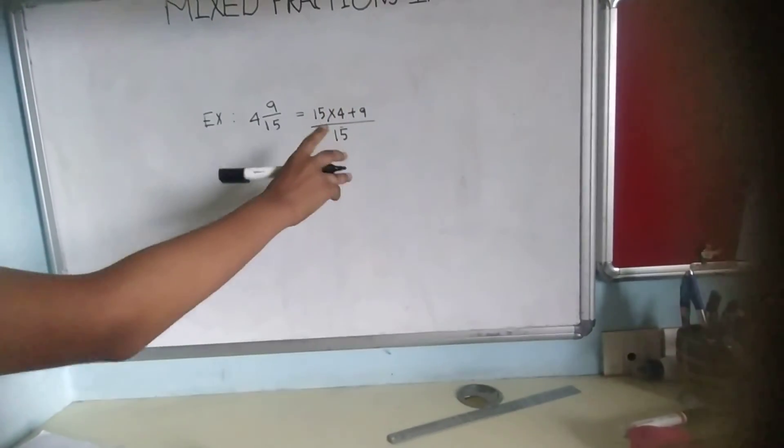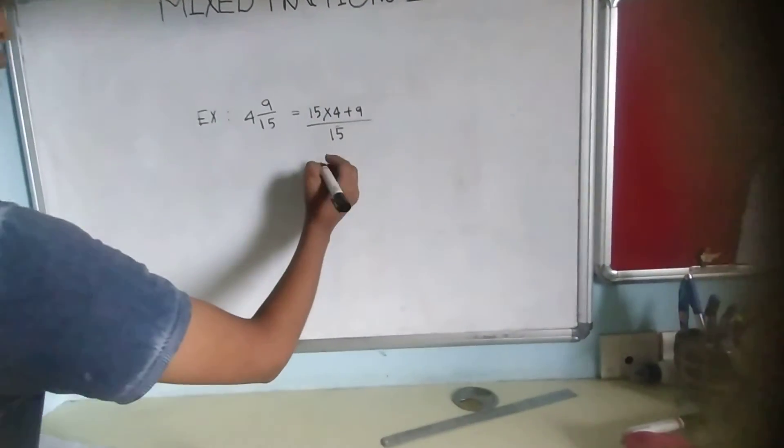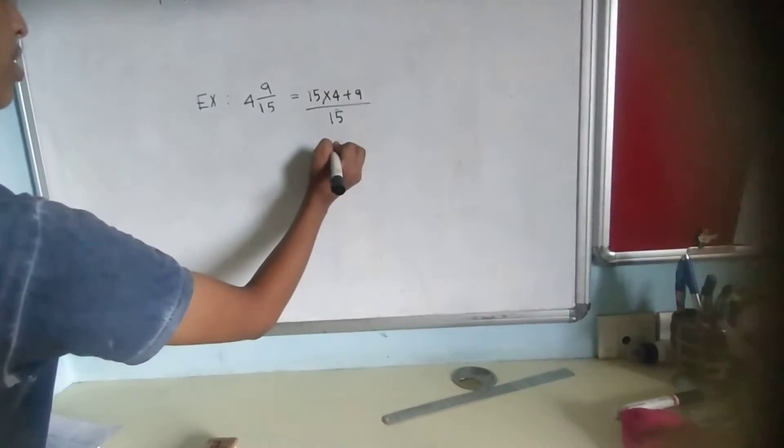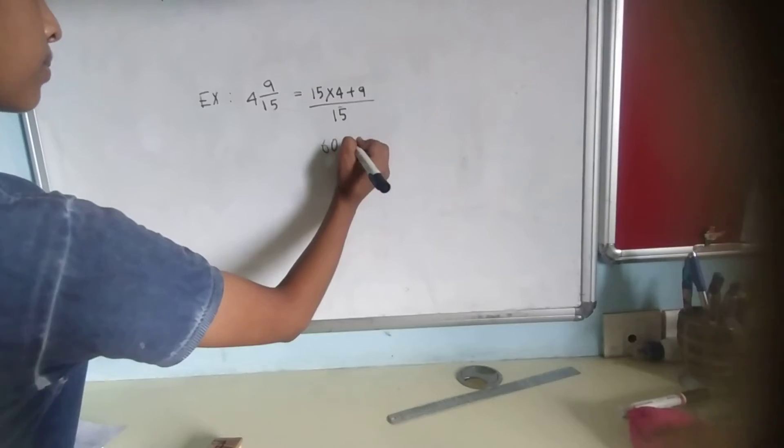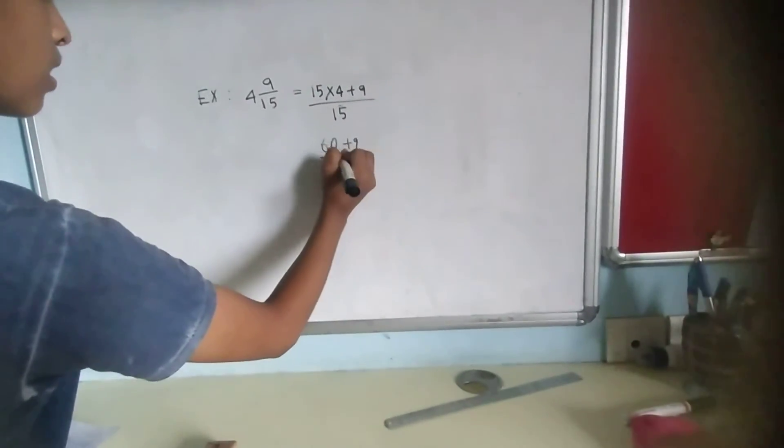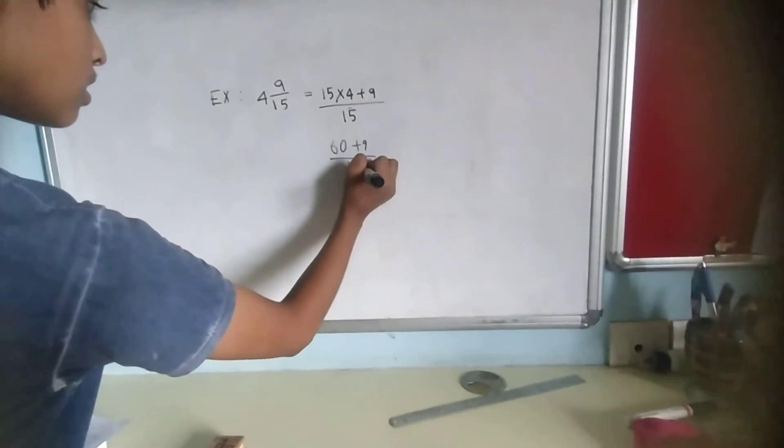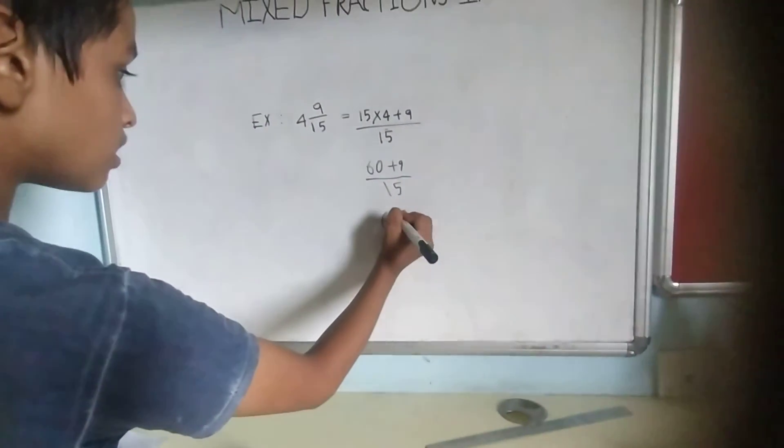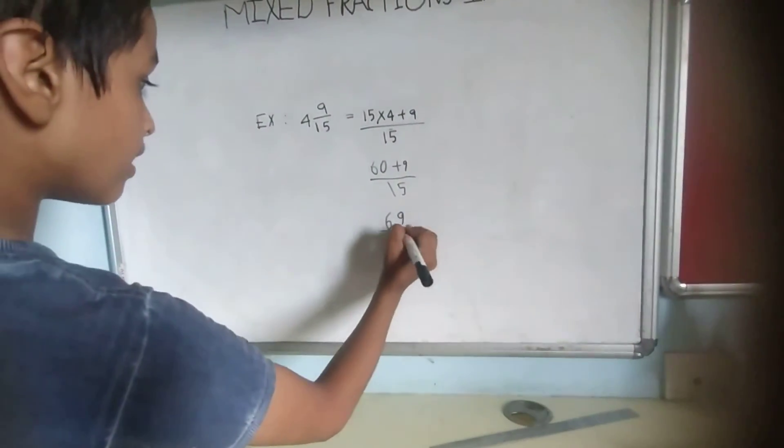The denominator is same. Now 15 fours are 60. 60 plus 9 by 15. Now it will be 69 by 15.